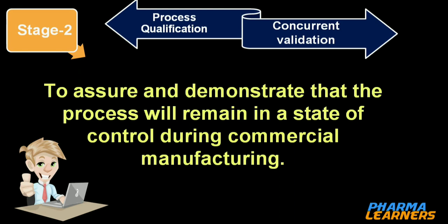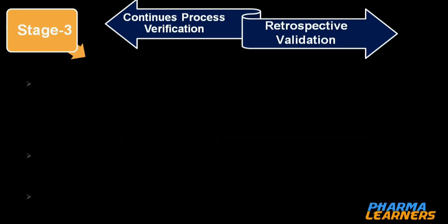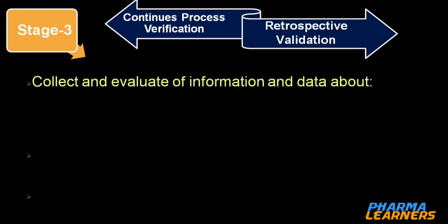Moving on to stage 3, which is continuous process verification. At this stage we can correlate with retrospective evaluation. We collect and evaluate information and data about the performance of the process and final control tests.